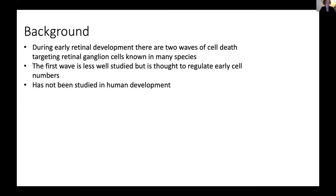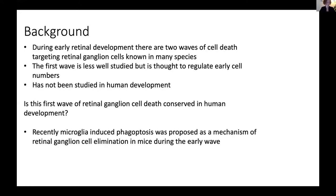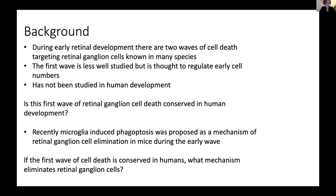Since the first wave has never been studied in humans, my first question was: is this first wave of retinal ganglion cell death conserved in human development? Recently, a paper proposed microglia-induced phagoptosis as a mechanism of retinal ganglion cell elimination during the early wave in mice. My second question was: if the first wave is conserved in humans, what mechanism eliminates retinal ganglion cells?